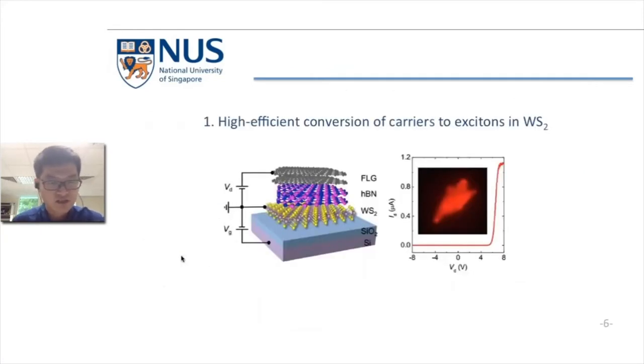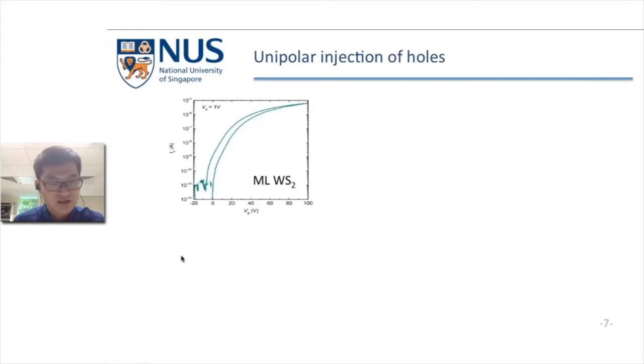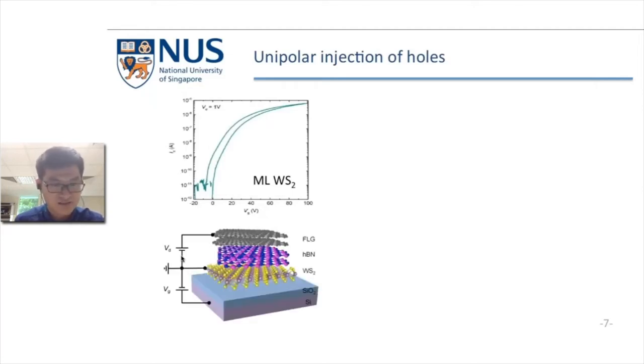Now I move to the first work, which focuses on monolayer tungsten disulfide. In this work, we achieved light emission and very high efficient conversion of carriers to excitons in the semiconductor. Monolayer WSE2 is a naturally un-doped semiconductor, and the doping level can be further tuned by a simple back gate.